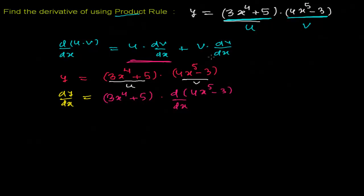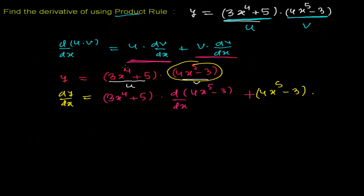Now for the second part: plus the second function (4x⁵ - 3) times the derivative of the first function, d/dx of (3x⁴ + 5).